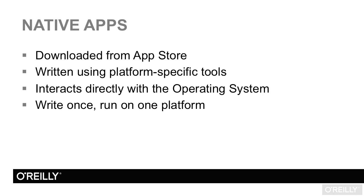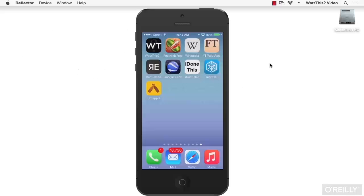Native apps can interact directly with native device functionality, such as geolocation, vibration, and notifications. All of these native functionalities of your device can be accessed directly using native apps. Let's take a look at a couple of native apps.